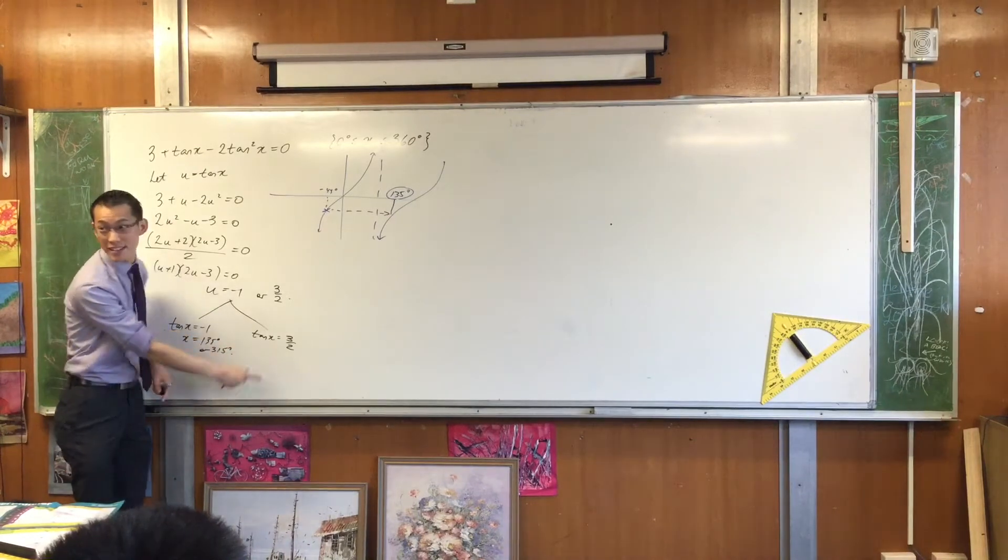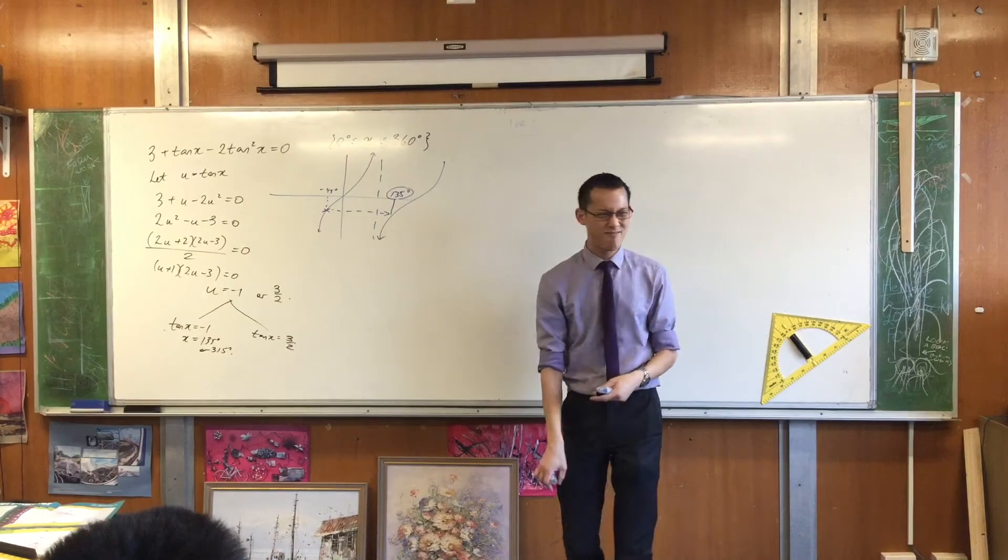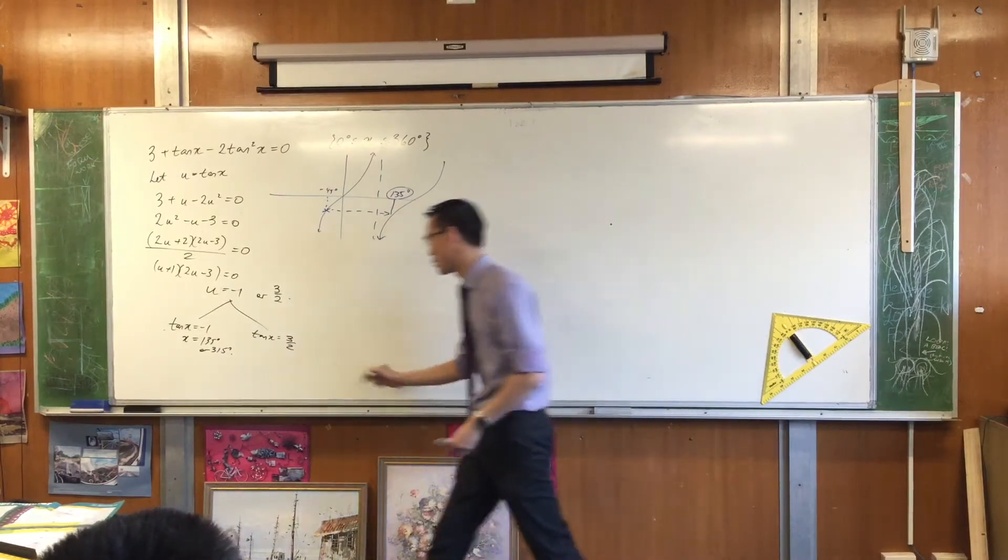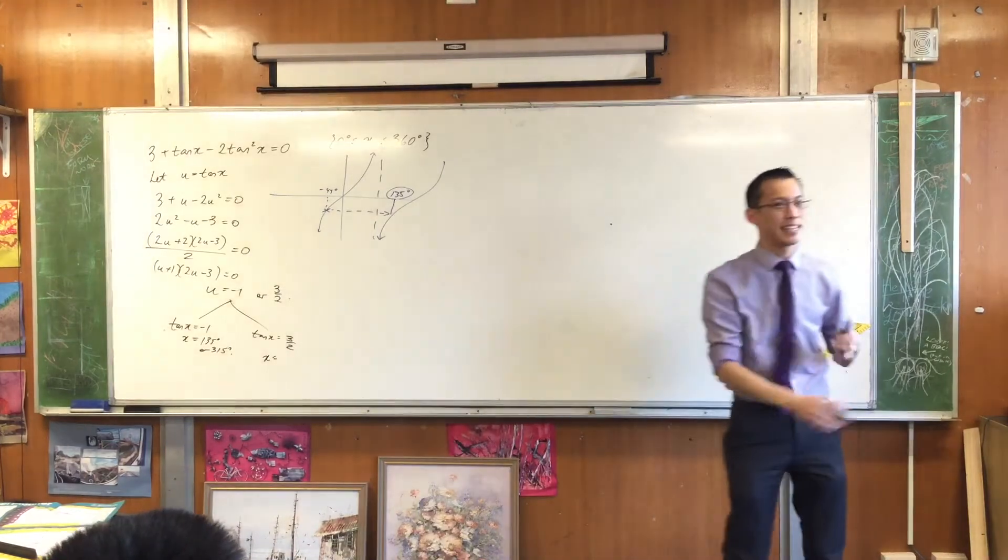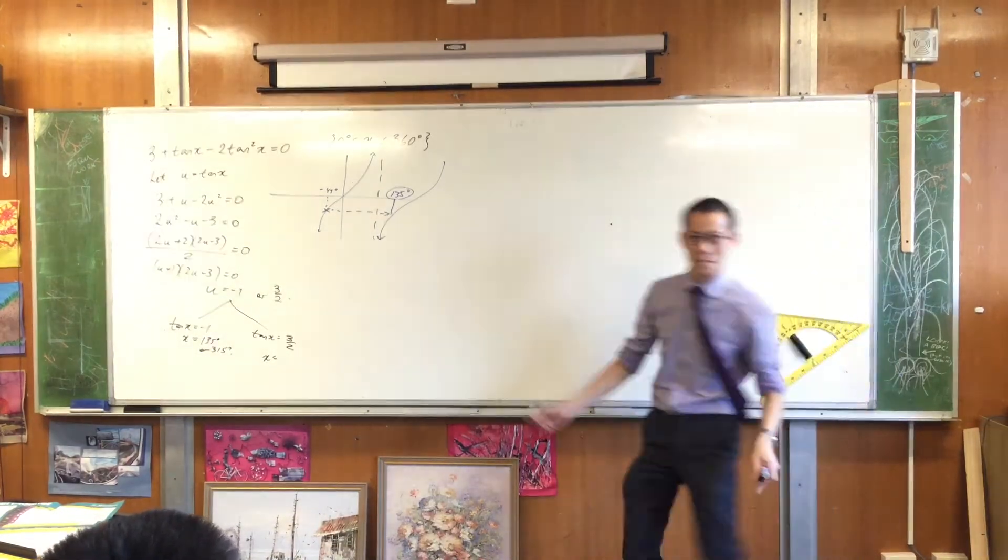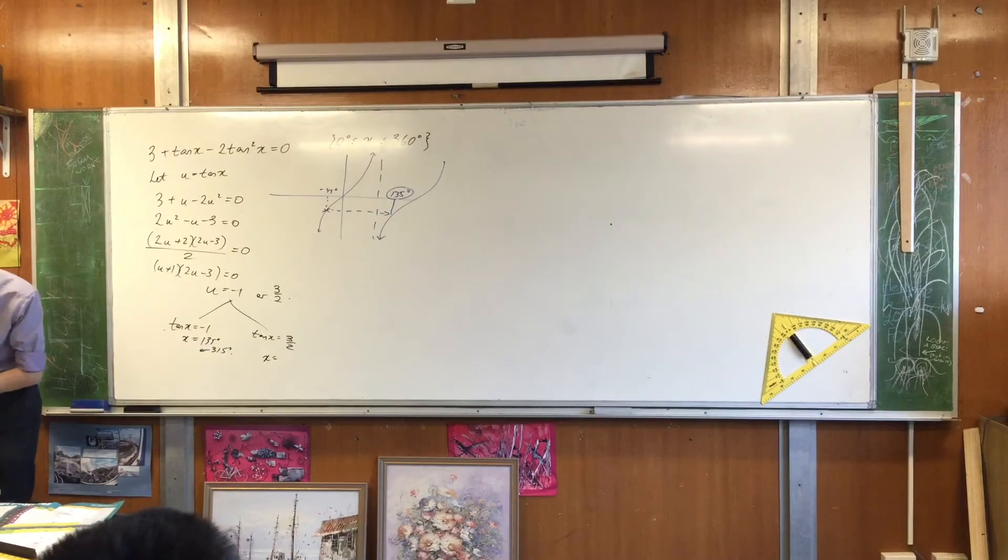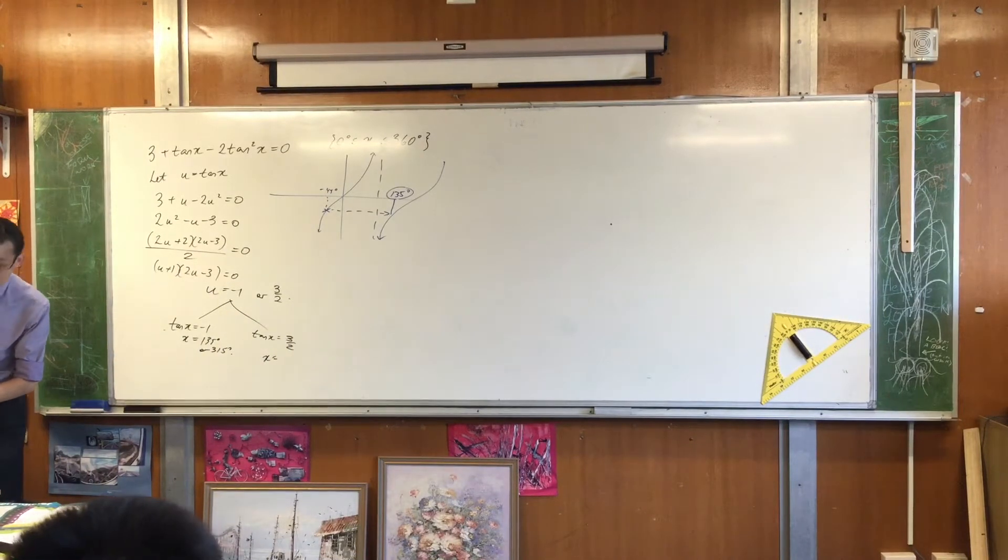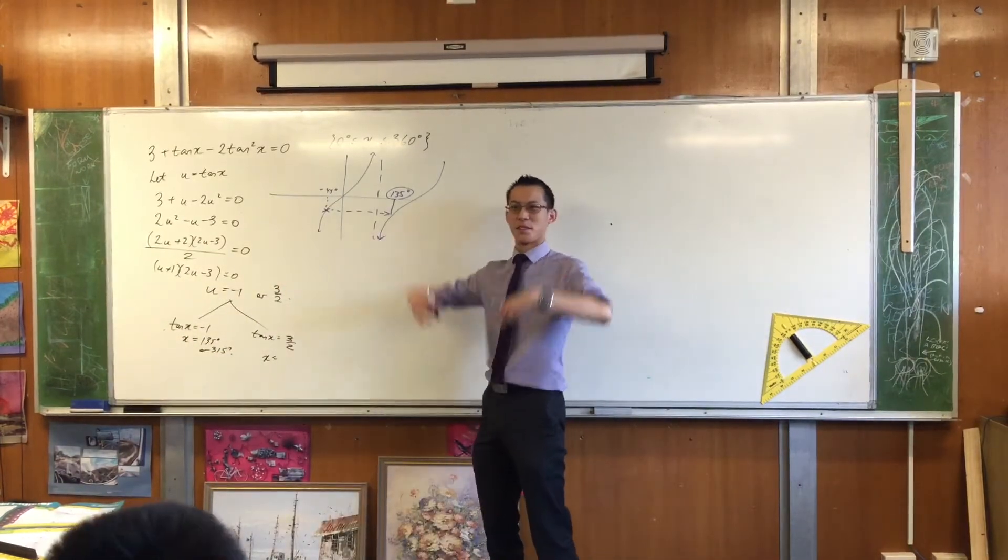That x can be 135 or 315. So that's from here. But then you've got another set of solutions that come from the second equation. tan(x) is 3 on 2. That's not the exact value. So what are you going to do? Reach for your calculator. Go ahead. Have you got a calculator there? Am I going to beat someone to it? Or are you guys going to pass it?